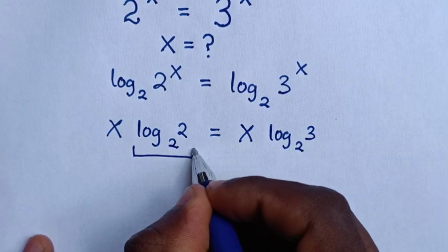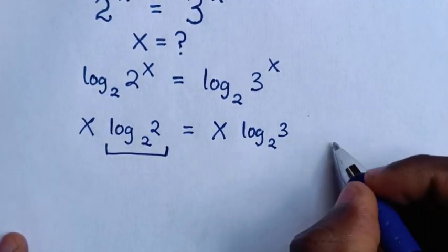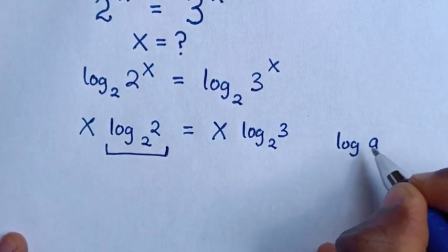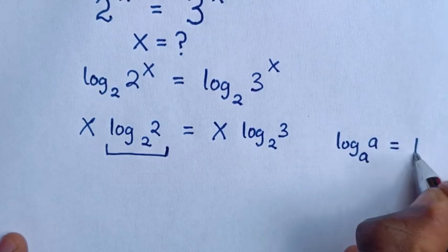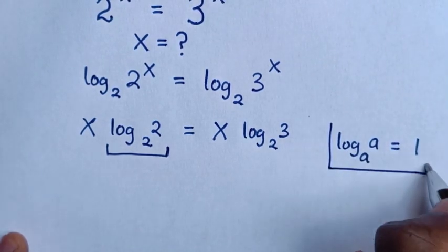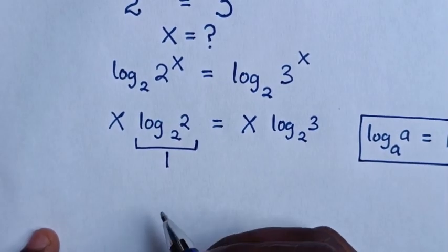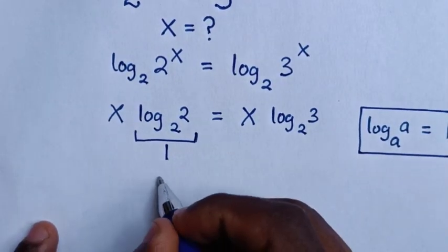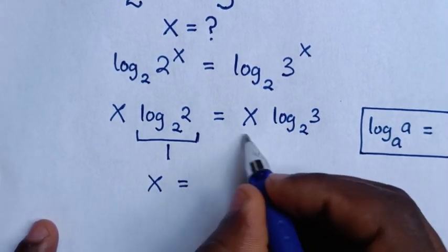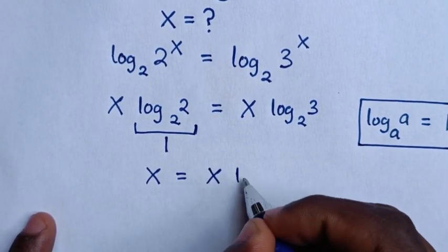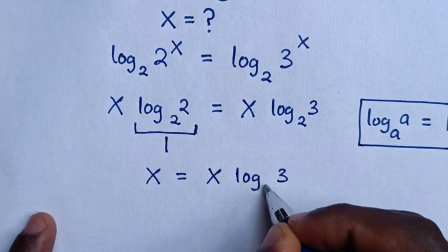Then from here we'll apply logarithmic rule which is log of base a of a equals 1. So in here it is 1, then x times 1 is x equals x log of base 2 of 3.